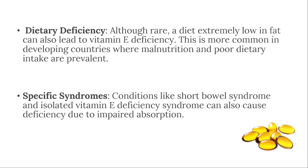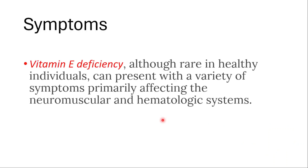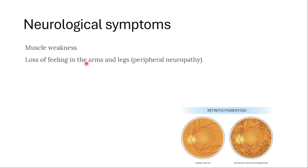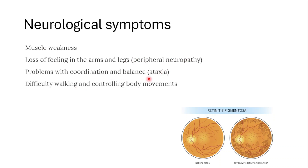What symptoms will we see with vitamin E deficiency? Although rare in healthy individuals, it can present with a variety of symptoms primarily affecting the neuromuscular and hematological systems. The main neurological symptoms include muscle weakness, loss of feeling in the arms and legs — known as peripheral neuropathy — and problems with coordination and balance, called ataxia, including difficulty walking and controlling body movements.